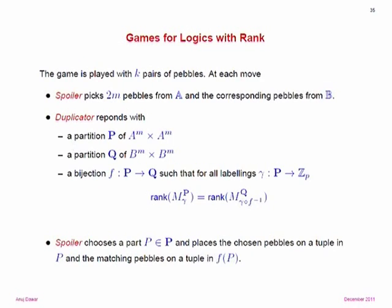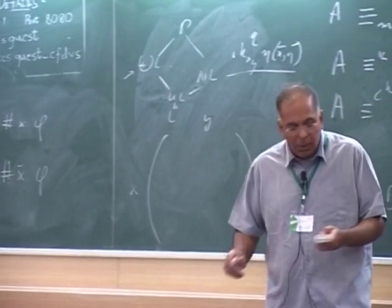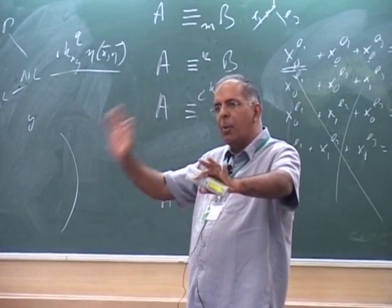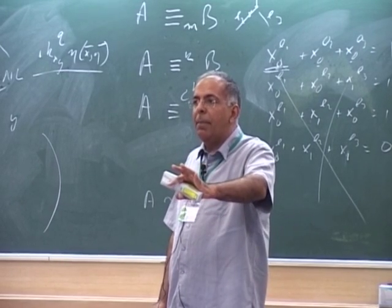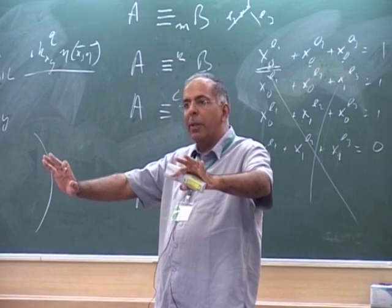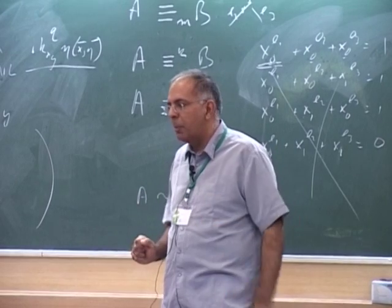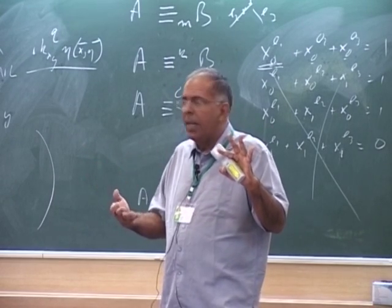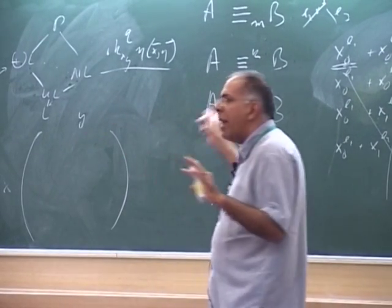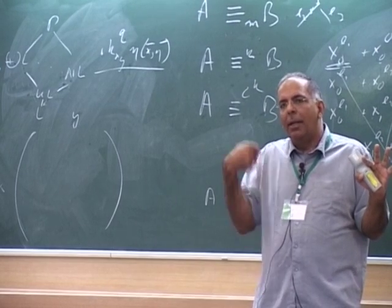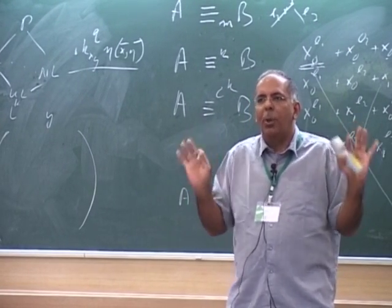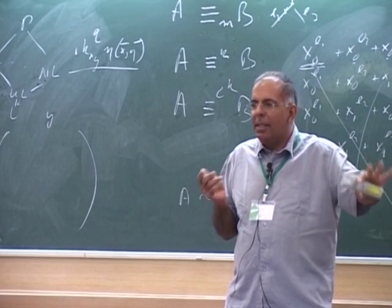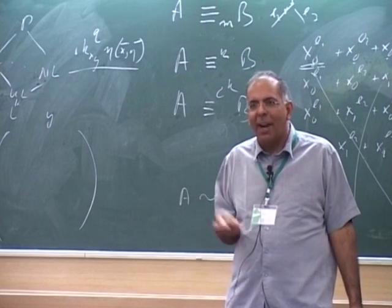I'll give you the definition of the game. You have the Immerman-Lander characterization where spoiler picks a set and duplicator responds with a set of the same size. You could do something similar: spoiler constructs a matrix, duplicator responds with a matrix of the same rank, spoiler challenges an entry, duplicator responds. The trouble is you need to ensure the spoiler is restricted to picking definable matrices. The same issue arises in the Immerman-Lander game, but they prove that allowing spoiler extra power doesn't change the equivalence relation. We don't know how to prove that, and requiring only definable relations seems like catching your own tail since definability is what we're trying to characterize.